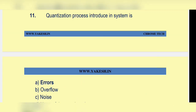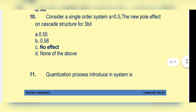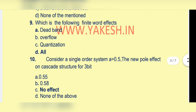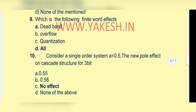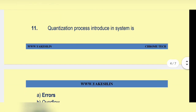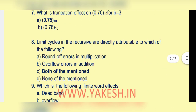Quantization process introduced in system is option a: errors. Single order system a equal to 0.5, new pole effect on cascade structure for three bits — no effect. Finite word effects option d: all of the above — dead band, overflow, quantization. Limit cycle in recursive system is directly attributable to option c: both — round-off error in multiplication and overflow error in addition.